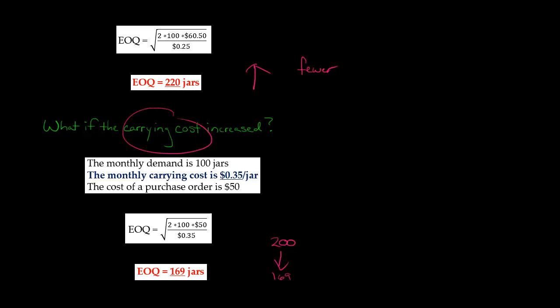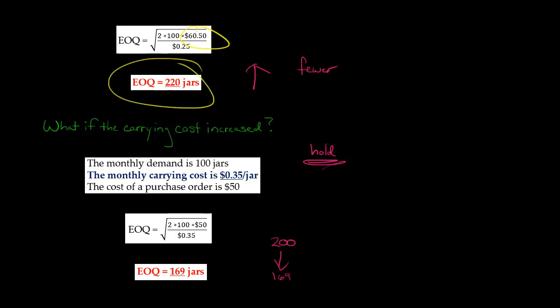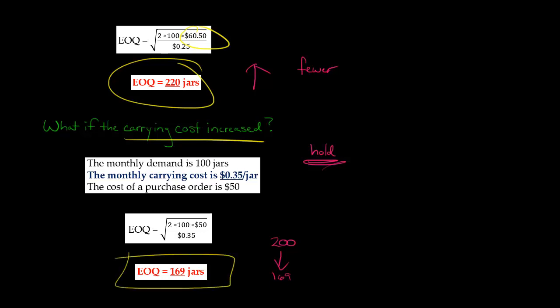When the carrying cost goes up, think about the intuition: it's more costly to hold inventory. So if it becomes more costly to hold inventory, we're going to want to hold less. We're not going to want to order in bulk — let's reduce the amount of jars of peanut butter we order because it's expensive to hold on to them. So if the ordering costs go up, we want to do fewer orders and buy more in bulk — increase our order size. But if the carrying costs increase and it's more expensive to hold inventory, then we're fine doing more frequent orders, but we don't want to hold a bunch of inventory. So when we do make an order, let's order fewer jars of peanut butter.